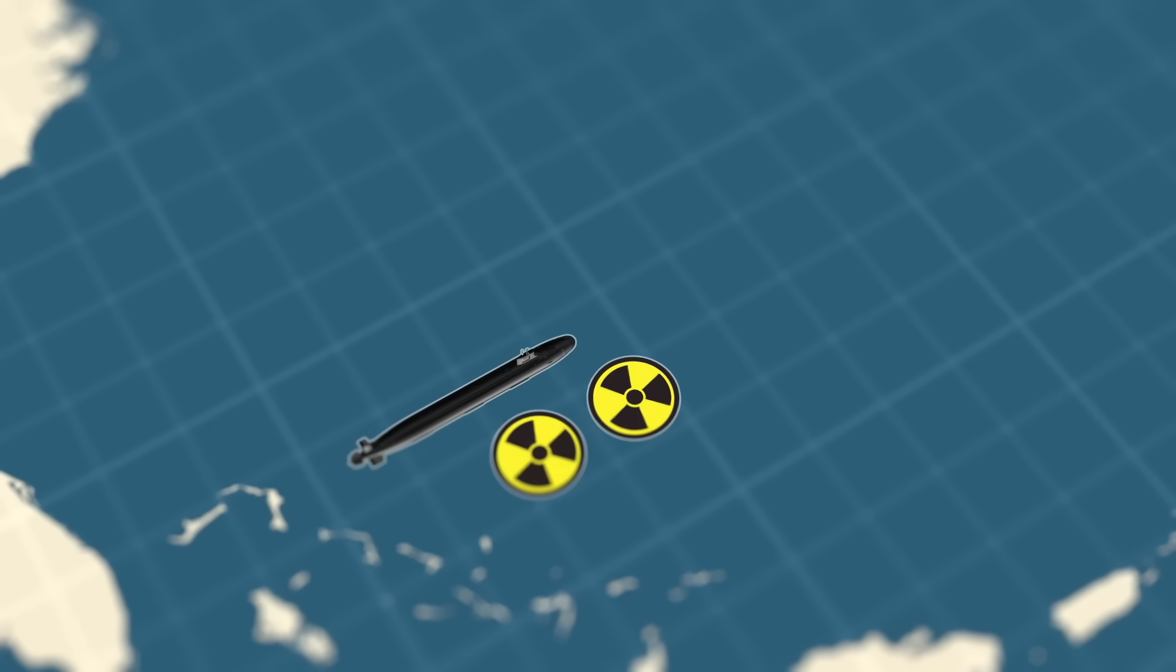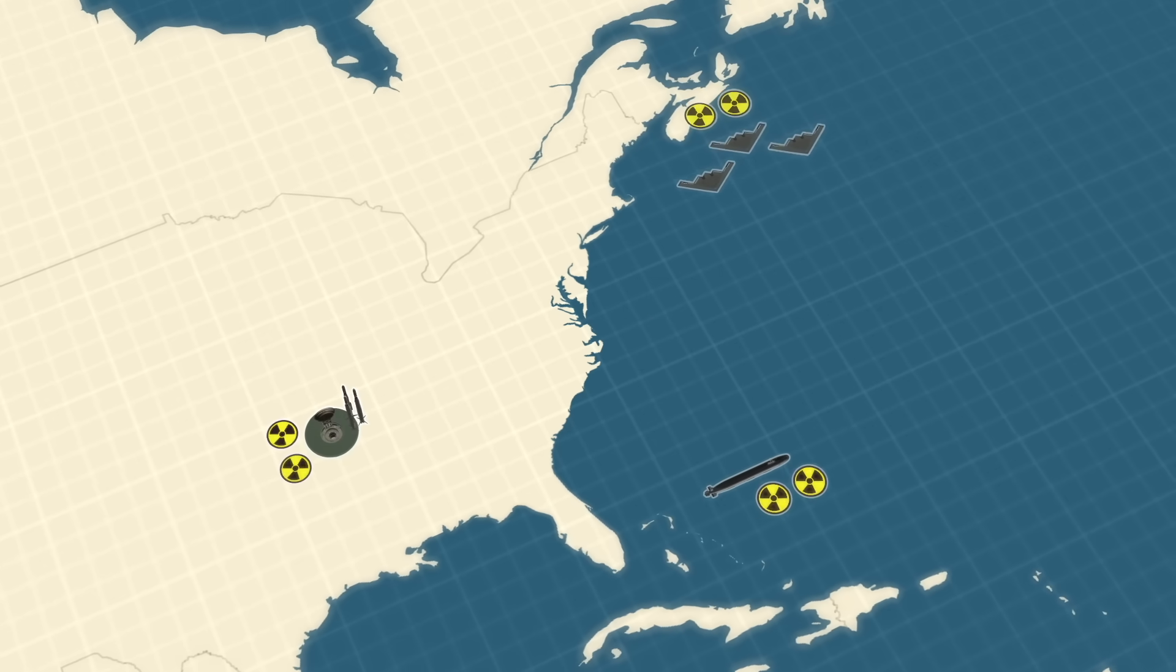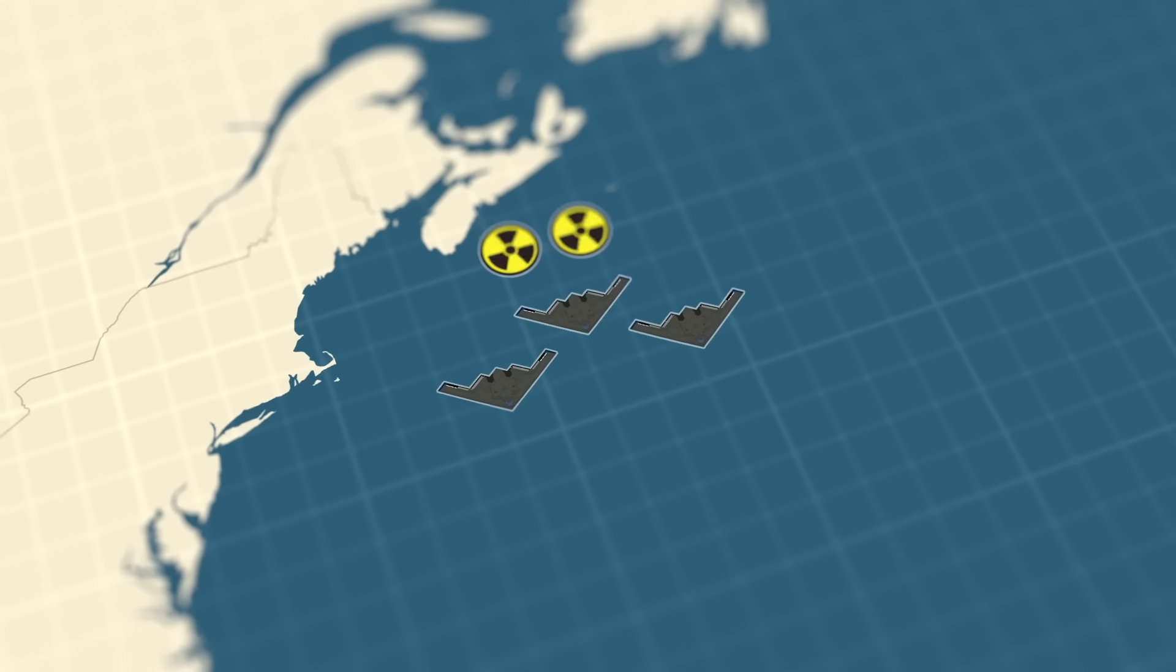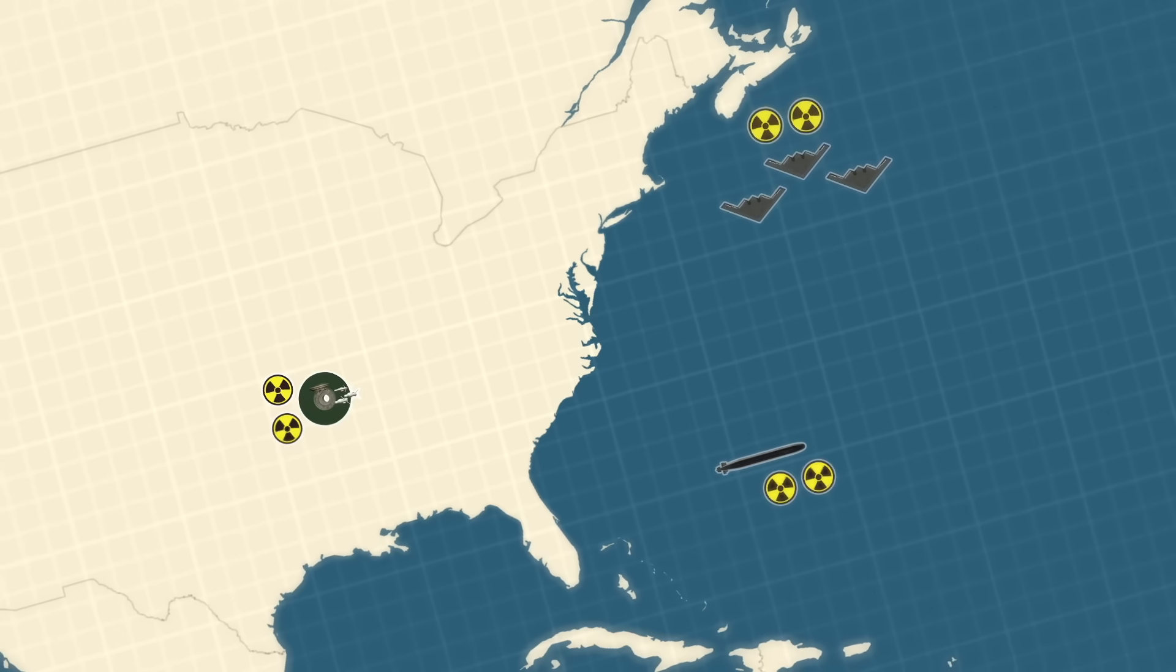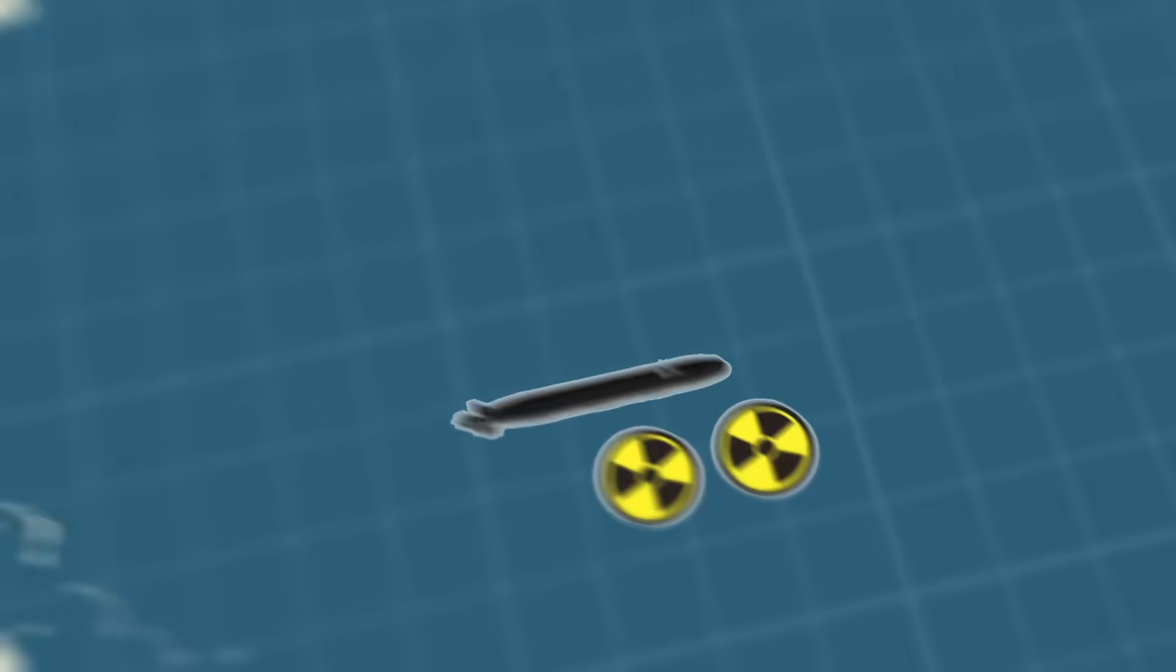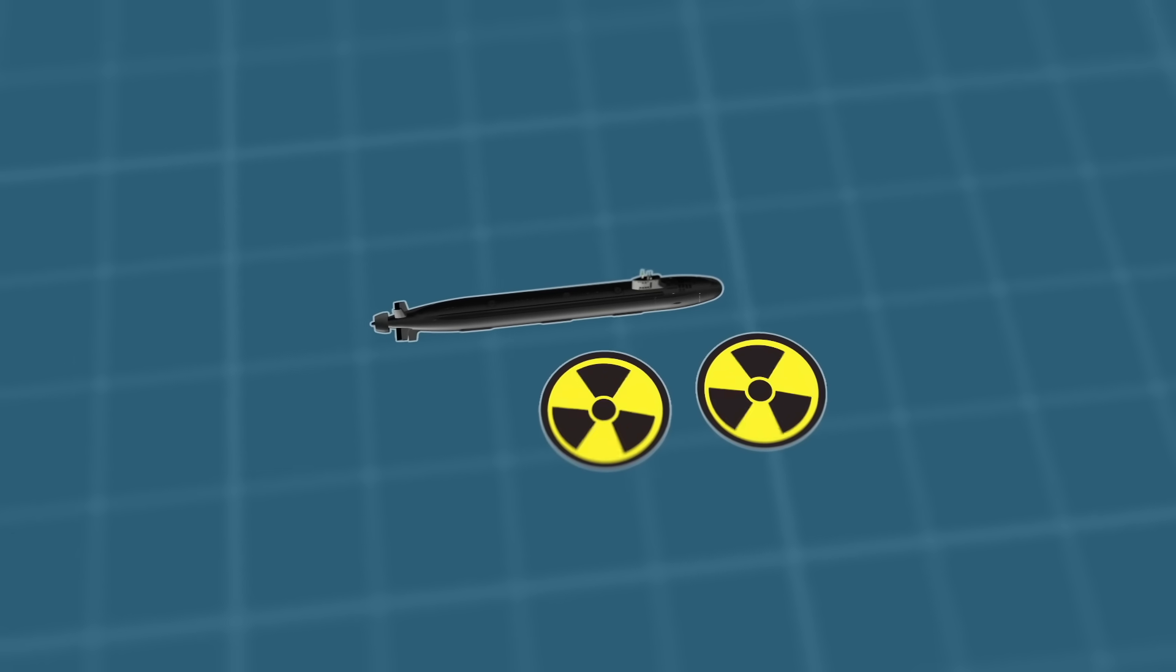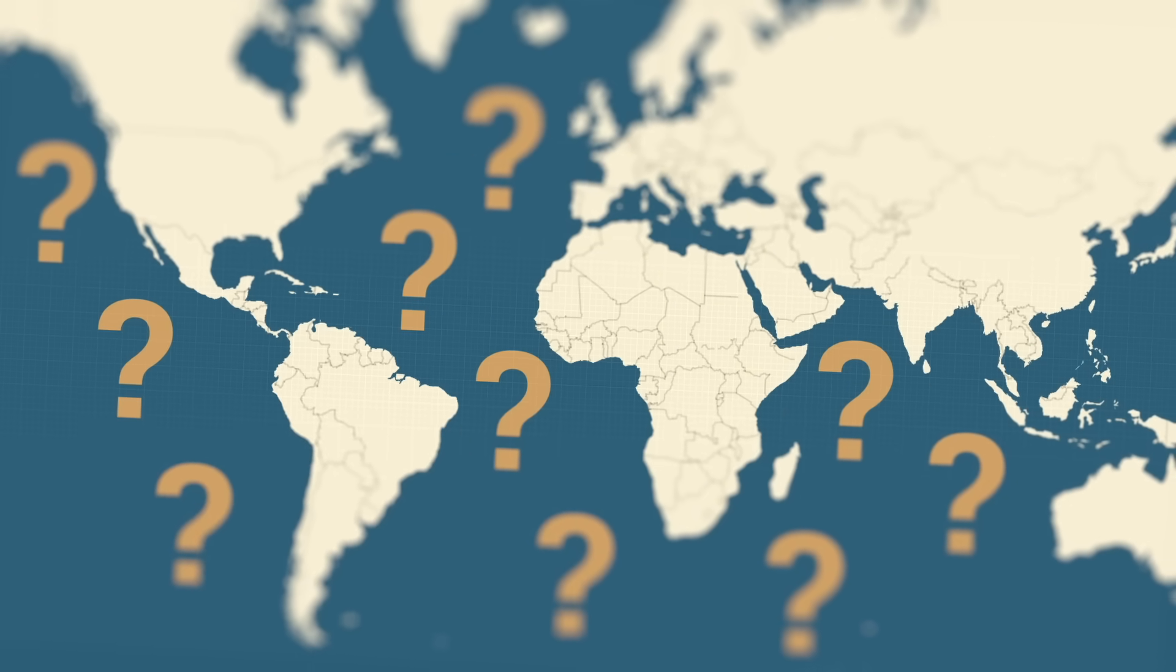Nuclear-powered submarines are a key part of what's known as the nuclear triad, the three methods by which a nation can deliver a nuclear strike. Land-based missiles, air-launched bombs, and submarine-launched ballistic missiles. Each leg of the triad has strengths and weaknesses, but submarines are by far the most survivable. Once submerged, they can stay hidden for months, anywhere in the world, and that makes them almost impossible to target.